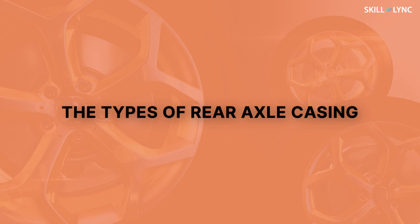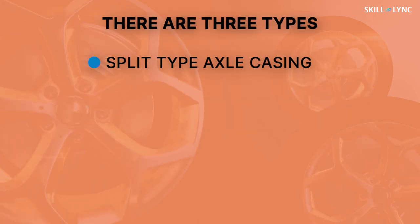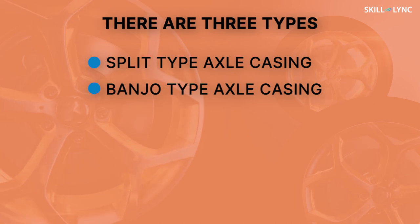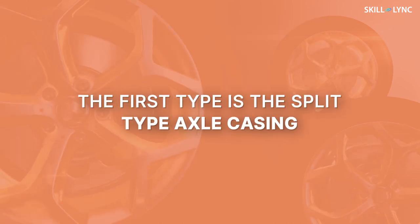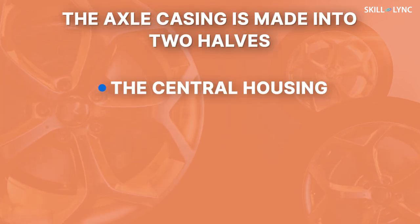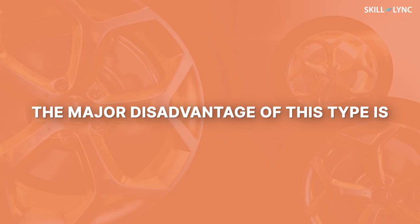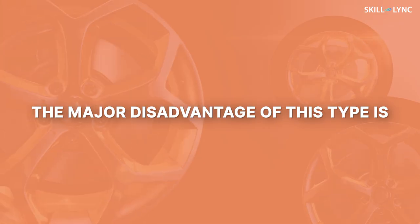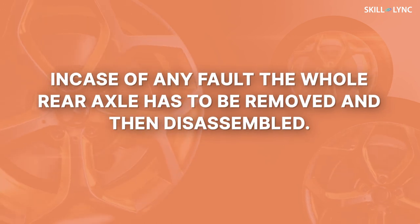Now we'll talk about the types of rear axle casing. There are three types: the split type axle casing, the banjo type axle casing, and the carrier type axle casing. The first type is the split type axle casing. In this type, the axle casing is made into two halves — the central housing and the extensions. The central housing contains a differential, and two extensions are bolted on both sides of the central housing during assembly. The major disadvantage of this type is that in case of any fault, the whole rear axle has to be removed and then disassembled.